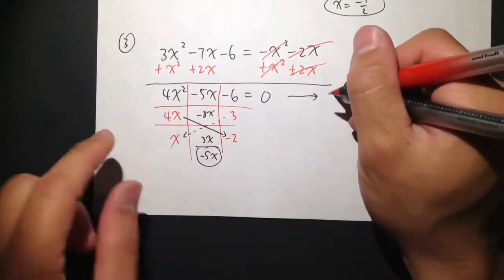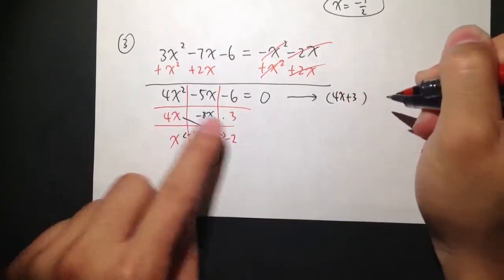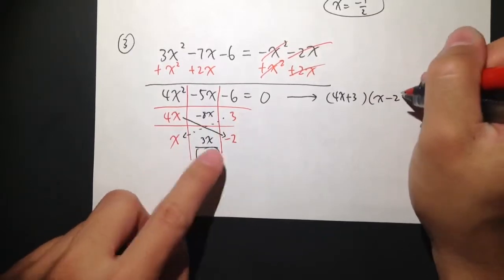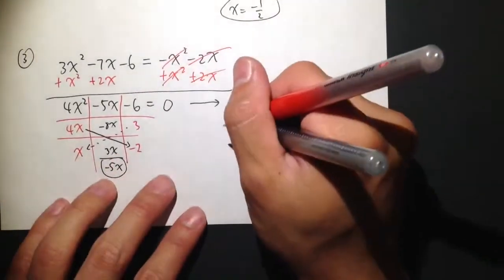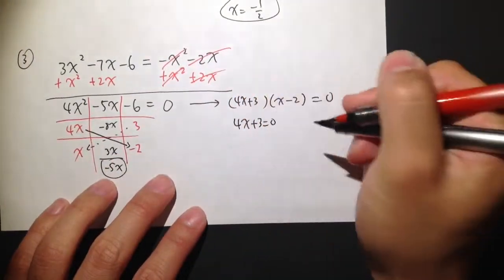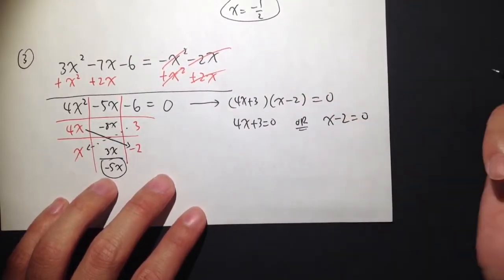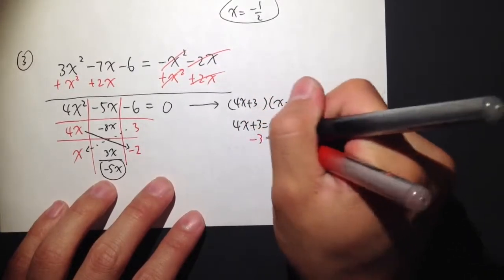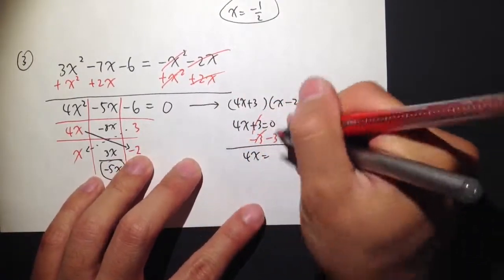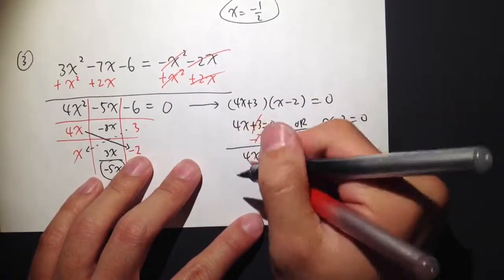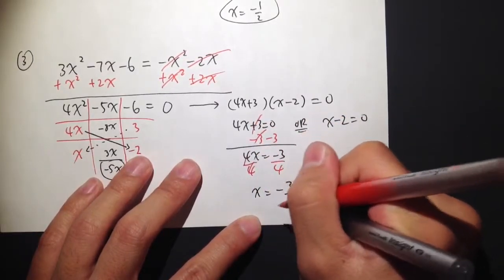I can go from here into two parentheses. The first one is 4x plus 3, and the second one is x minus 2, equals to zero. Set the first one equal to zero: 4x plus 3 equal to zero. Or, x minus 2 is equal to zero. To solve the first: subtract 3 on both sides, I get 4x equals negative 3. Then divide both sides by 4, giving x is equal to negative 3 over 4. First answer.